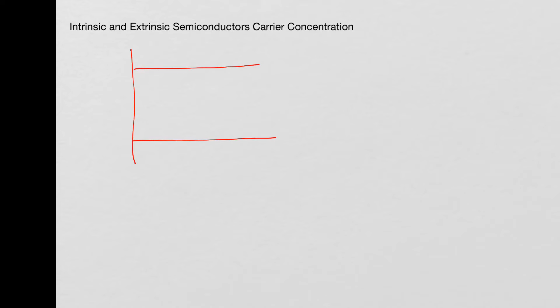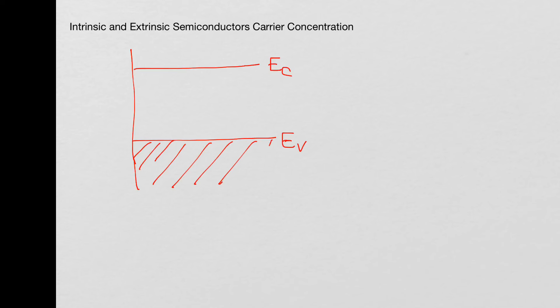In pure silicon with no doping of impurities, if we look at the band diagram, here is EV which is the upper valence band limit and EC is the lower conduction band limit. Electrons can possess energies below EV or above EC. At room temperature, looking at the silicon structure, you have covalent bonds with adjacent silicon atoms, and some of the electrons can escape at room temperature and become free electrons.